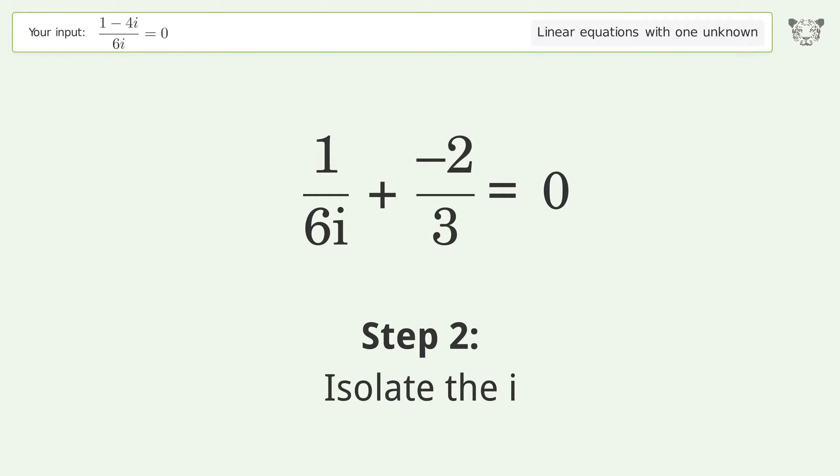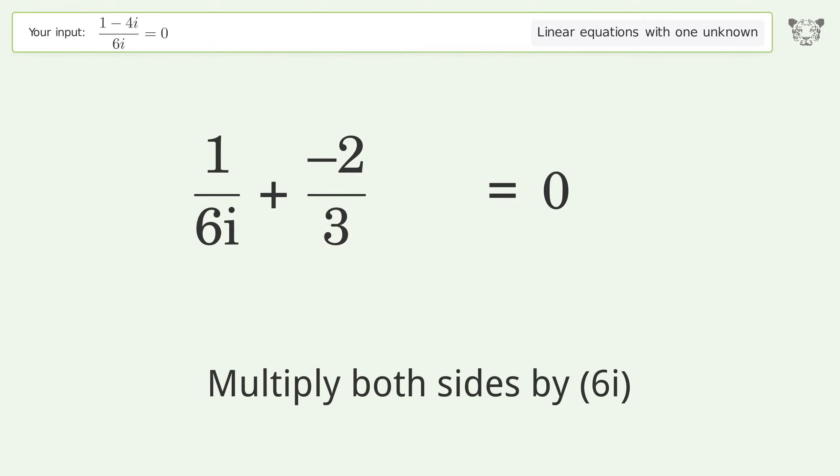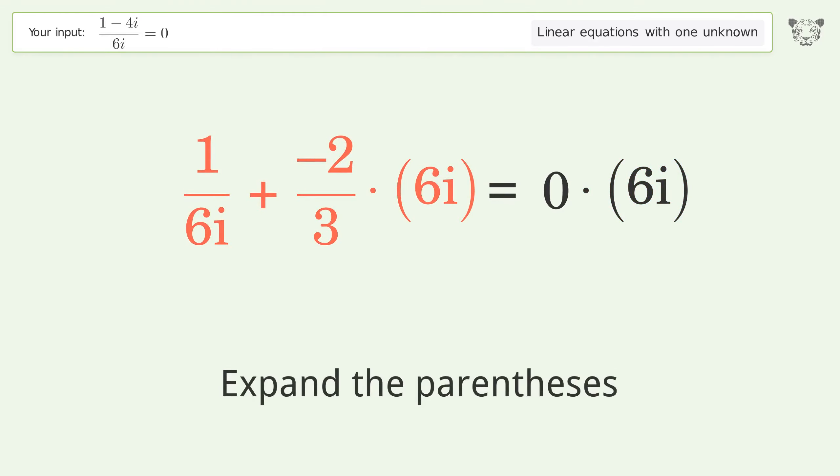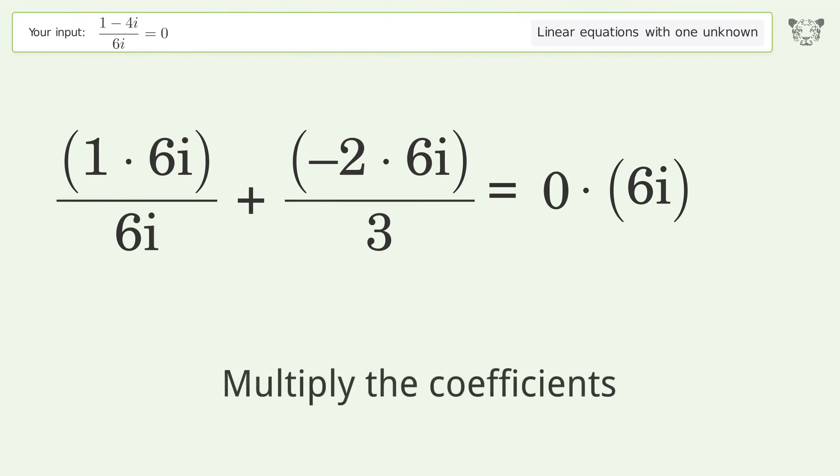Isolate the i. Multiply both sides by 6i. Expand the parentheses. Multiply the coefficients.